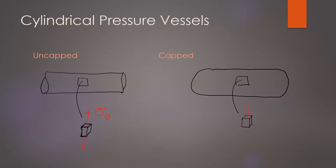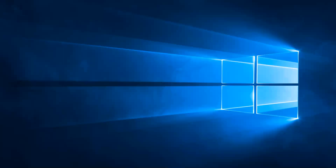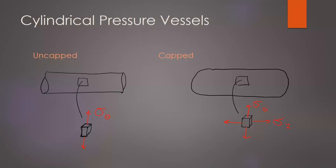When we have a capped vessel, not only do we have the stress trying to expand the circumference, but now we also develop tension in what we call the z-direction — the longitudinal direction. These stresses are always tensions, because the pressurized gas or liquid inside is pushing outward on the pressure vessel. It's pushing to expand the cross-sectional dimension and extend the length, so you're always getting tension in these two orthogonal directions.